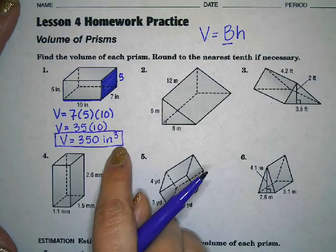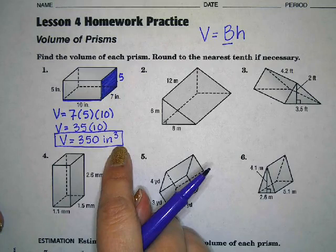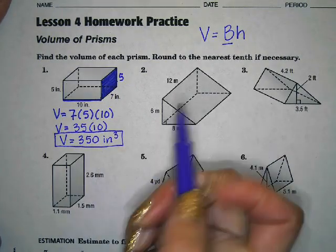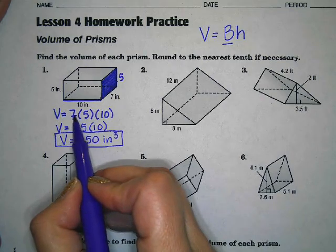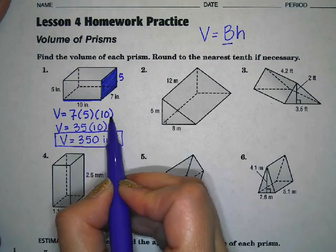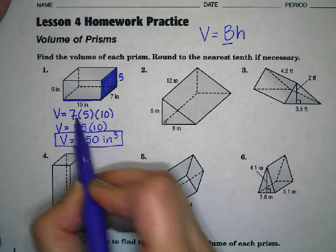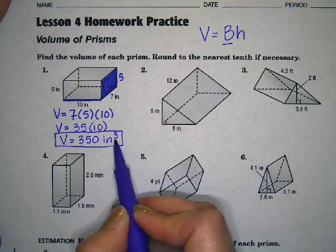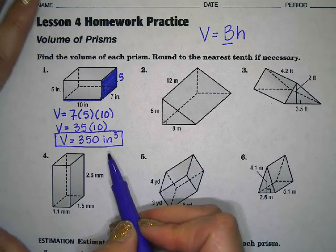Now where we get the cube here for the problem is from the units themselves. So we're taking seven inches times five inches times 10 inches. So we have one, two, three inches being multiplied, which is where the three comes from because this is a three-dimensional image.